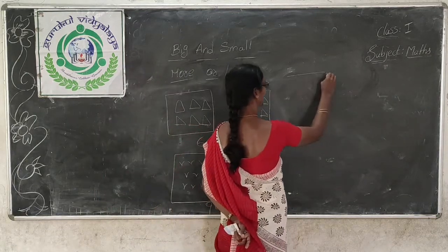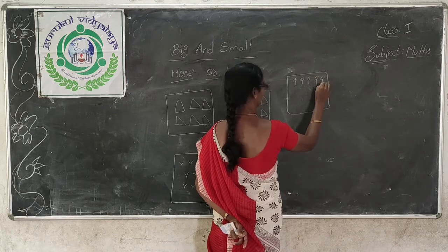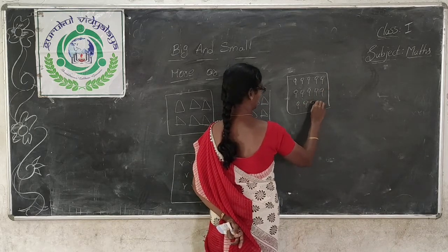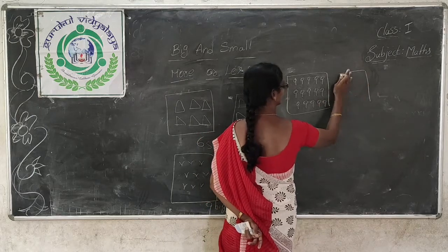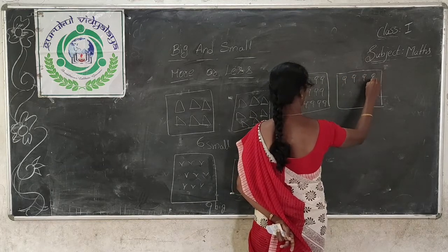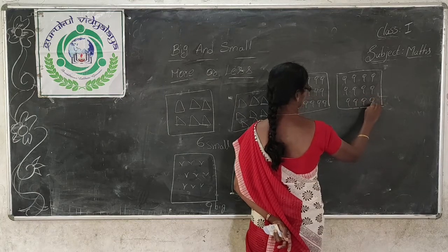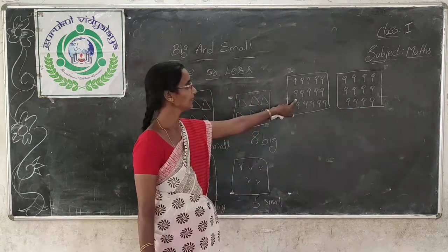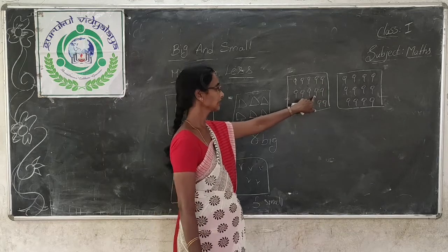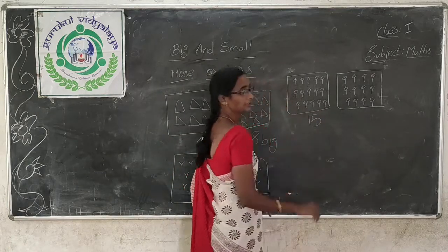And see one more item here. How many lollipops are there in this group? 1, 2, 3, 4, 5, 6, 7, 8, 9, 10, 11, 12, 13, 14, 15. Here in this group 15 lollipops are there.